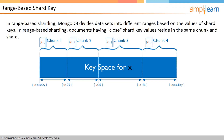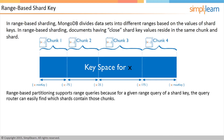In range-based sharding, MongoDB divides datasets into different ranges based on the values of shard keys, providing range-based partitioning. For example, consider a numeric shard key: if an imaginary number line goes from negative infinity to positive infinity, each shard key value falls at some point on that line. MongoDB partitions this line into chunks where each chunk can have a range of values. In range-based sharding, documents having close shard key values reside in the same chunk and shard. Range-based partitioning supports range queries because the query router can easily find which shards contain those chunks.